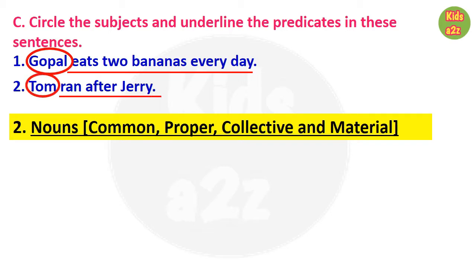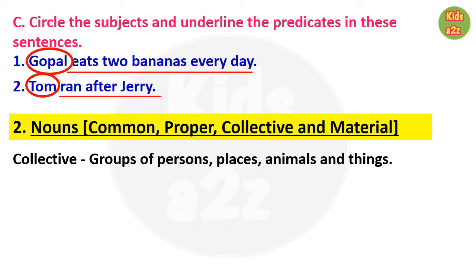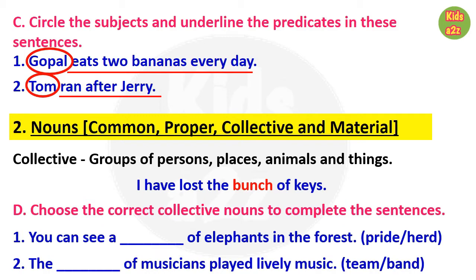The second topic is nouns, including common noun, proper noun, collective noun, and material noun. They already learned common noun and proper noun in Class 2. Collective nouns and material nouns are new for kids. Words that are the names of a group of persons, places, animals, or things are called collective nouns. For example: 'I have lost the bunch of keys' — here 'bunch' is the collective noun.